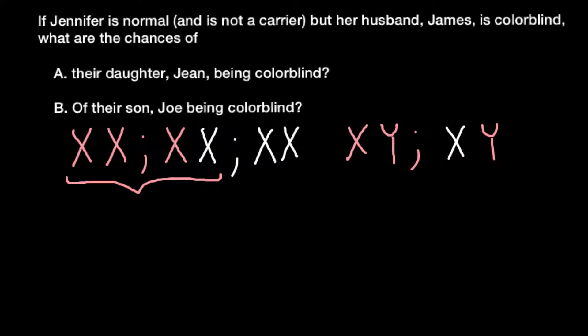We're told that we have James who is colorblind and his wife Jennifer who is normal. Also, we're told that she is not a carrier, so that means her genotype would be this one. And we're told that husband James is colorblind, that means this genotype.